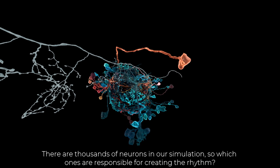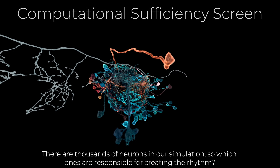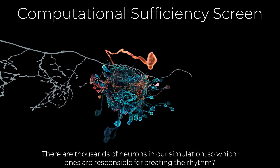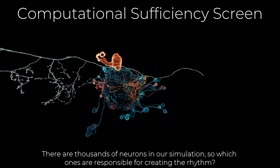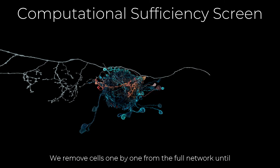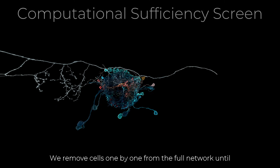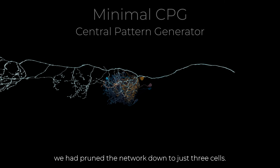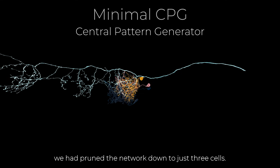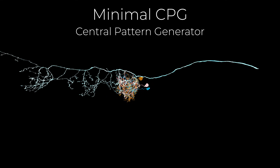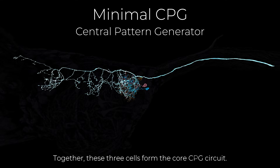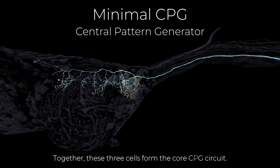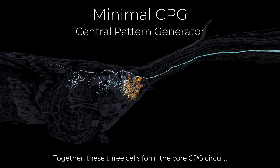There are thousands of neurons in our simulation, so which ones are responsible for creating the rhythm? We removed cells one by one from the full network until we had pruned the network down to just three cells. Together, these three cells form the core CPG circuit.